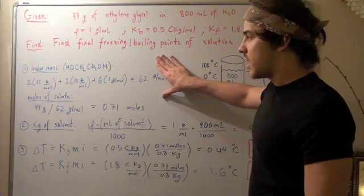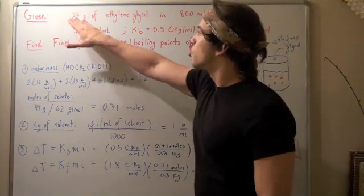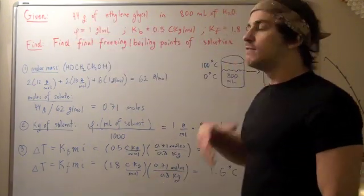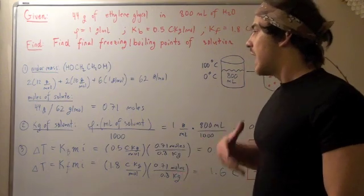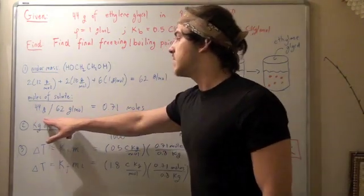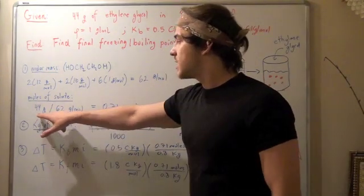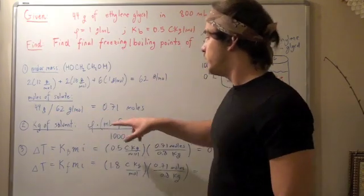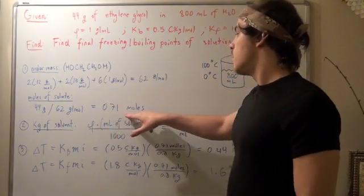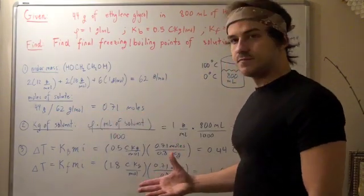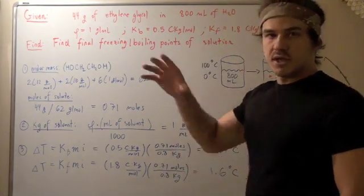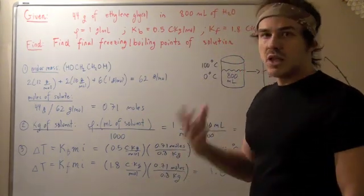Now to find the moles of solute, we take our grams of solute and divide that by molar mass. And we should get 44 grams divided by 62 grams. The grams cancel, moles goes on top, and we get 0.71 moles of our solute. So now we have the top component of our molality.